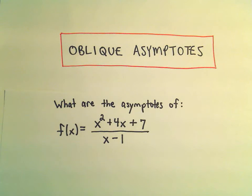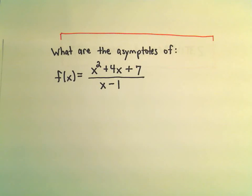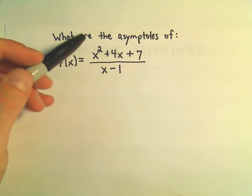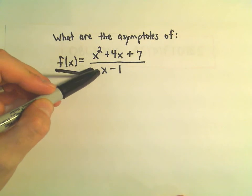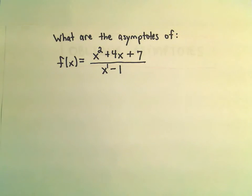In this video I'm going to do an example related to oblique asymptotes. Recall that oblique asymptotes occur when the degree of the numerator is one larger than the degree of the denominator. So that's certainly what we have in this case.